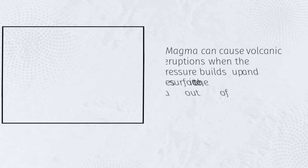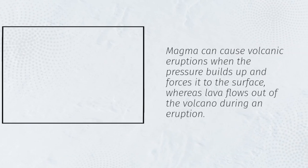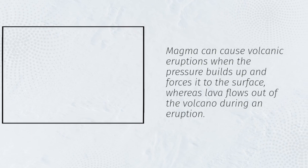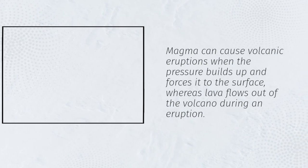Magma can cause volcanic eruptions when the pressure builds up and forces it to the surface, whereas lava flows out of the volcano during an eruption.